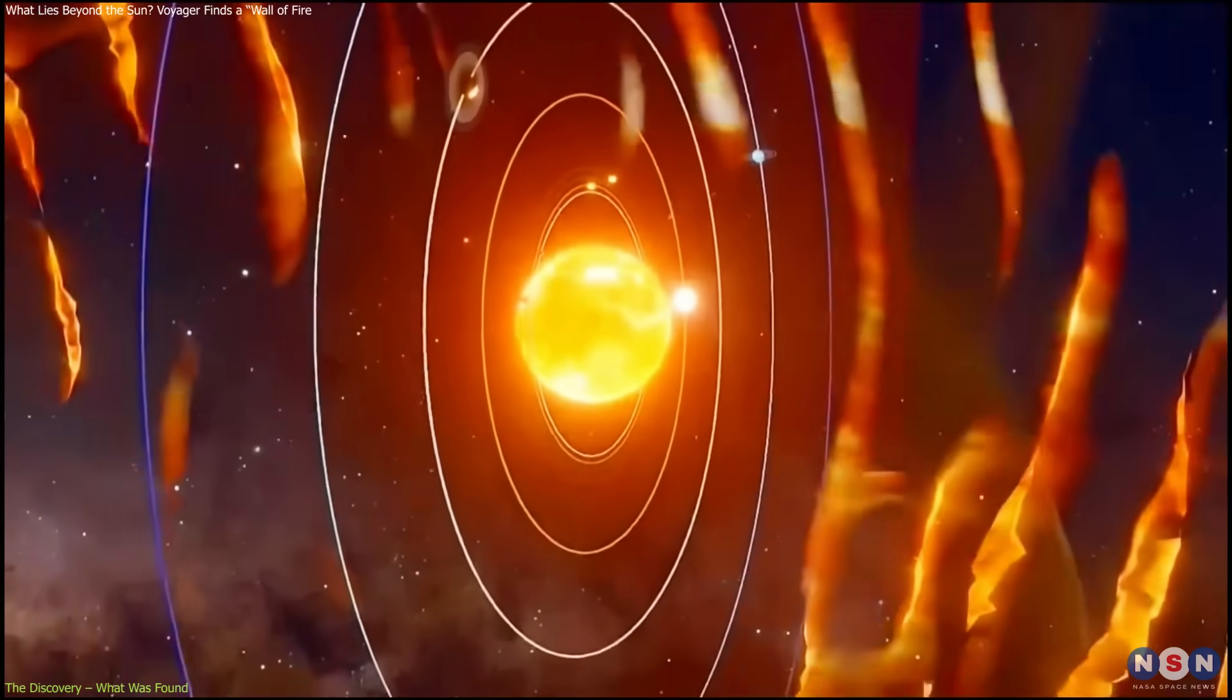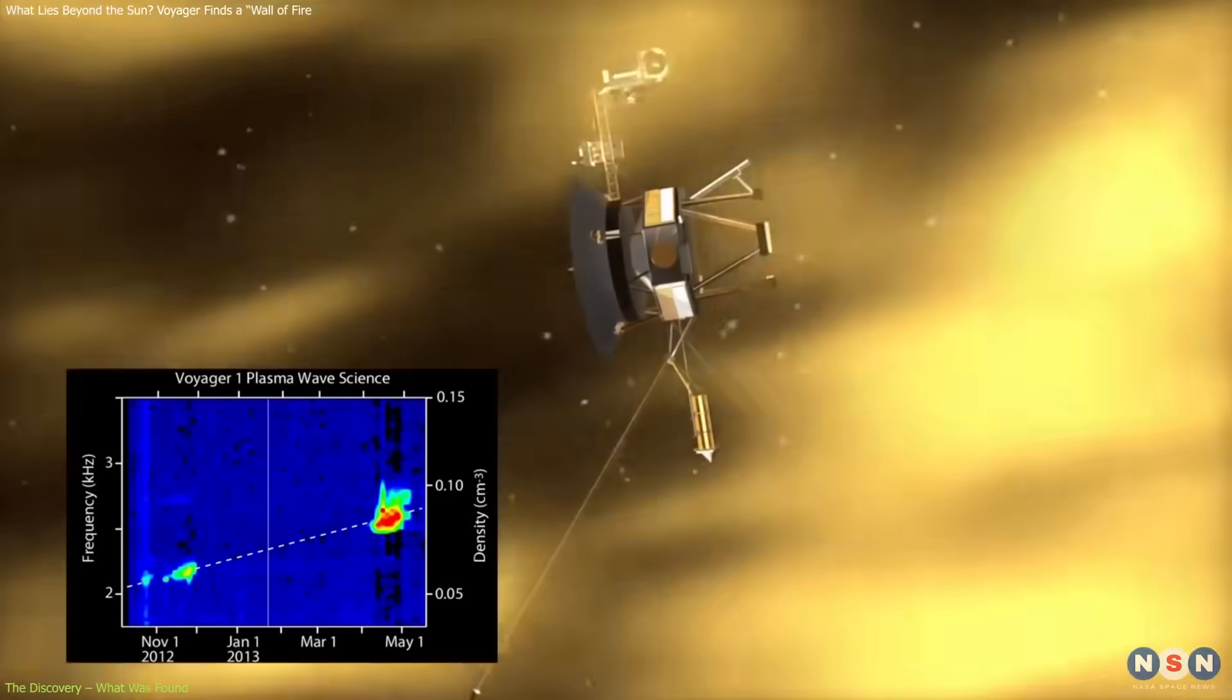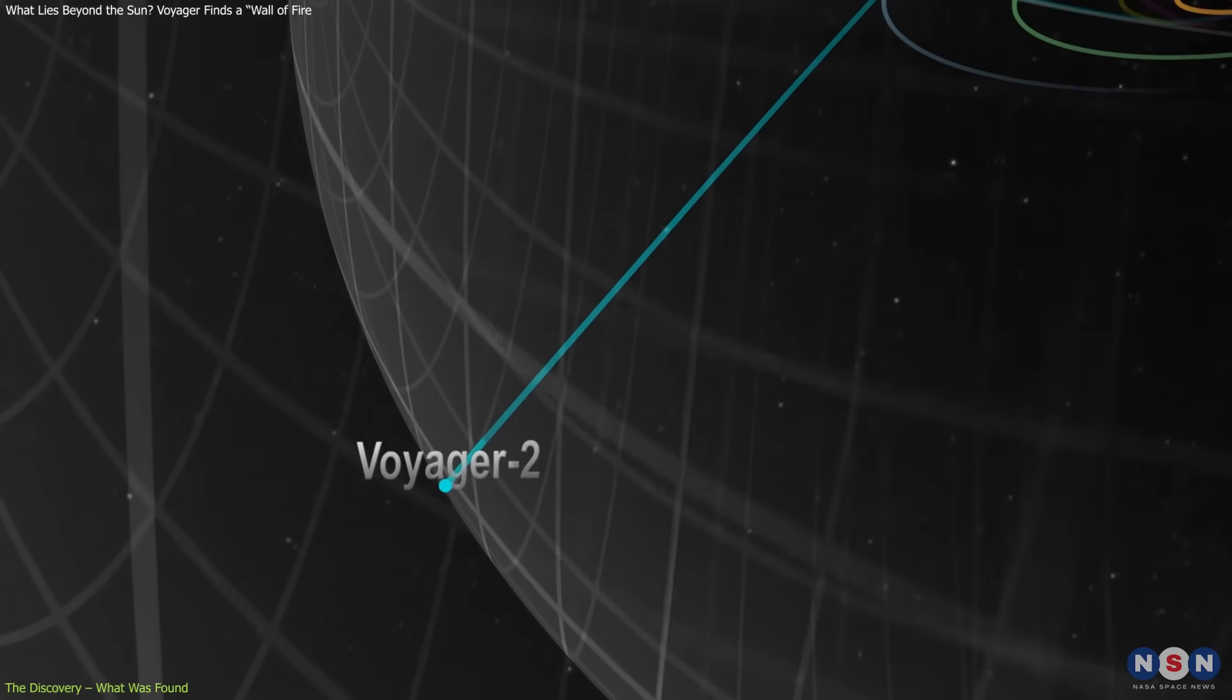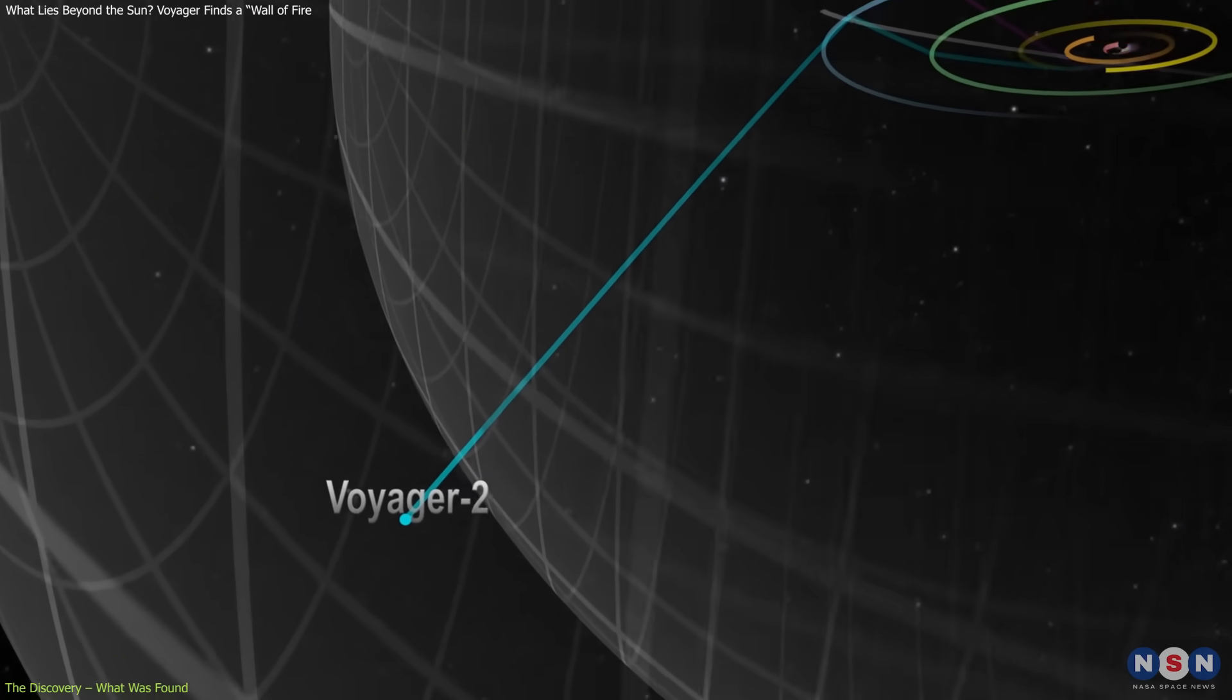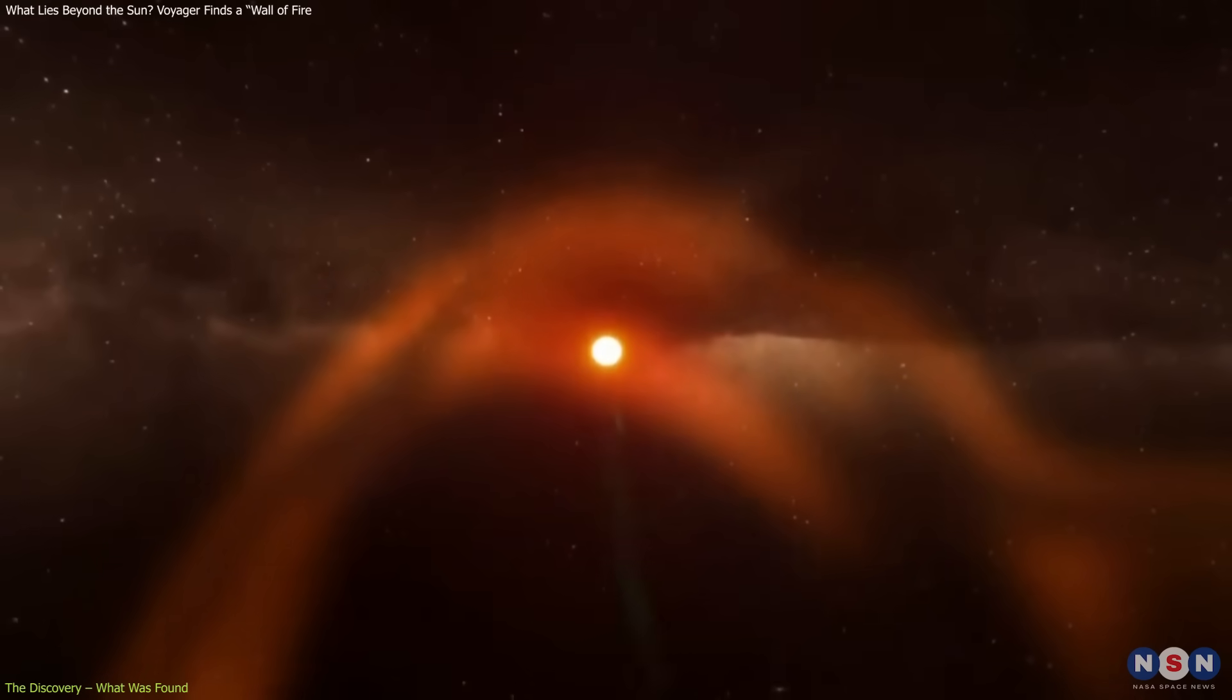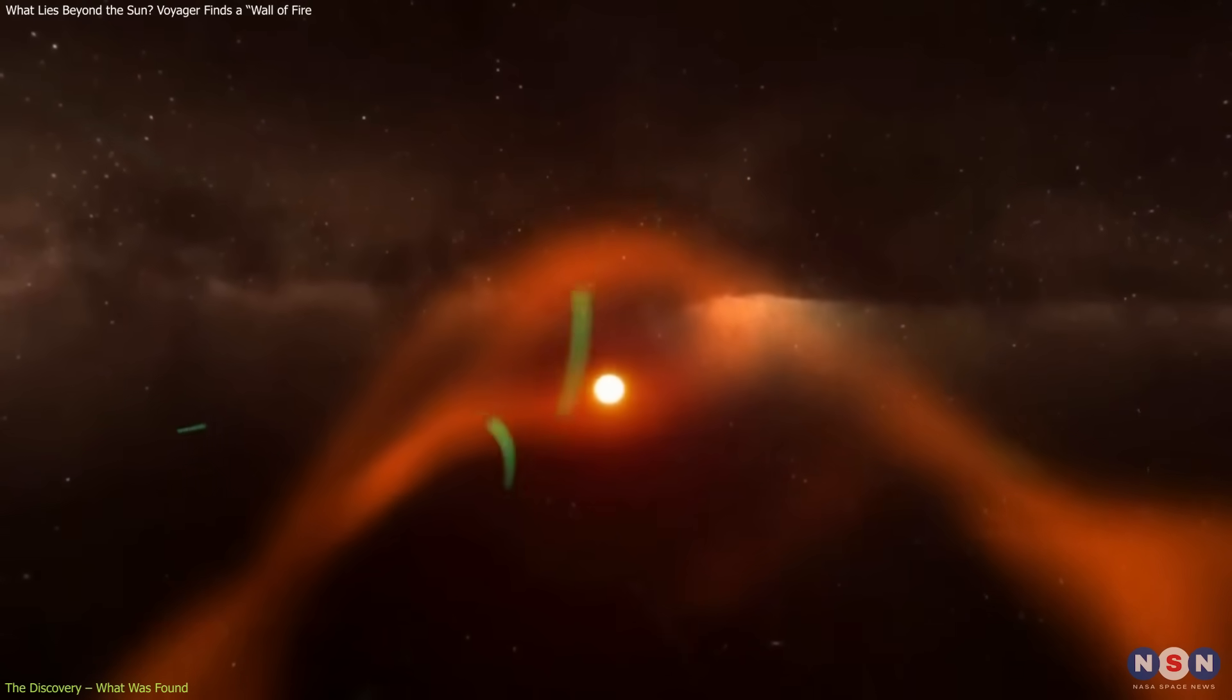Most importantly, this wasn't a one-off anomaly. Voyager 1's data could have been dismissed as unique to its crossing. But when Voyager 2 entered the heliopause six years later and recorded similar conditions, it confirmed this is a real and persistent feature of our solar system's boundary.